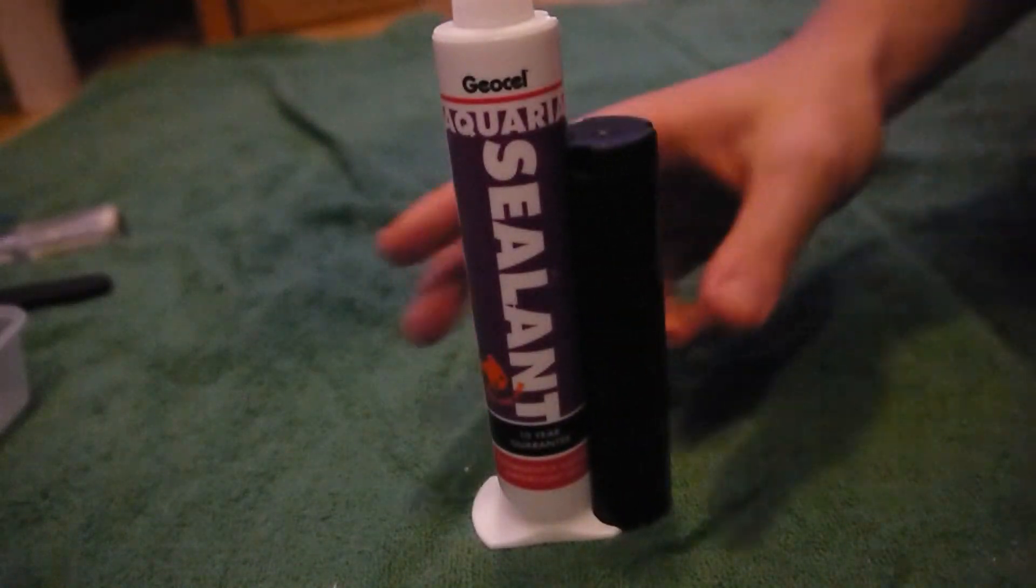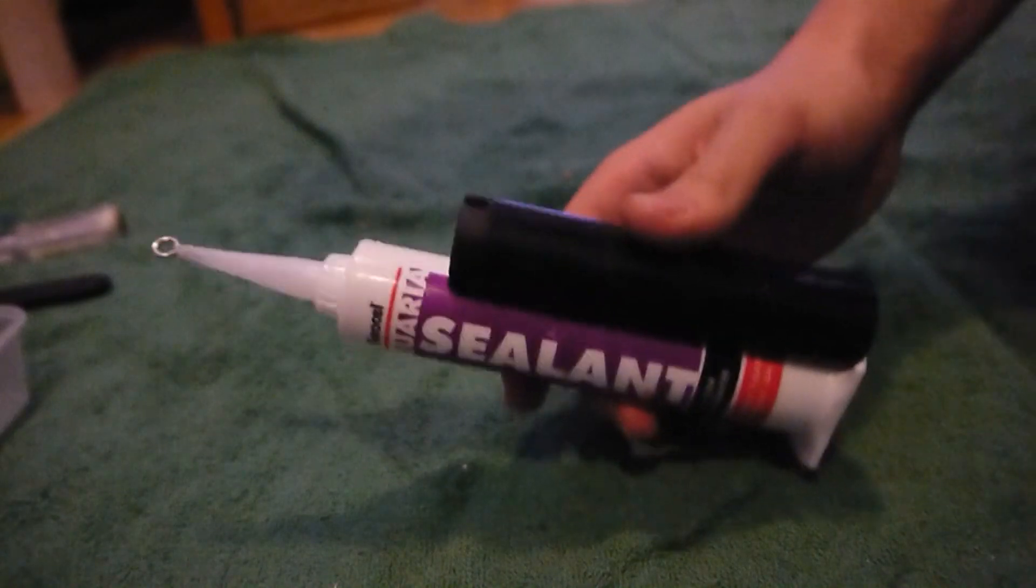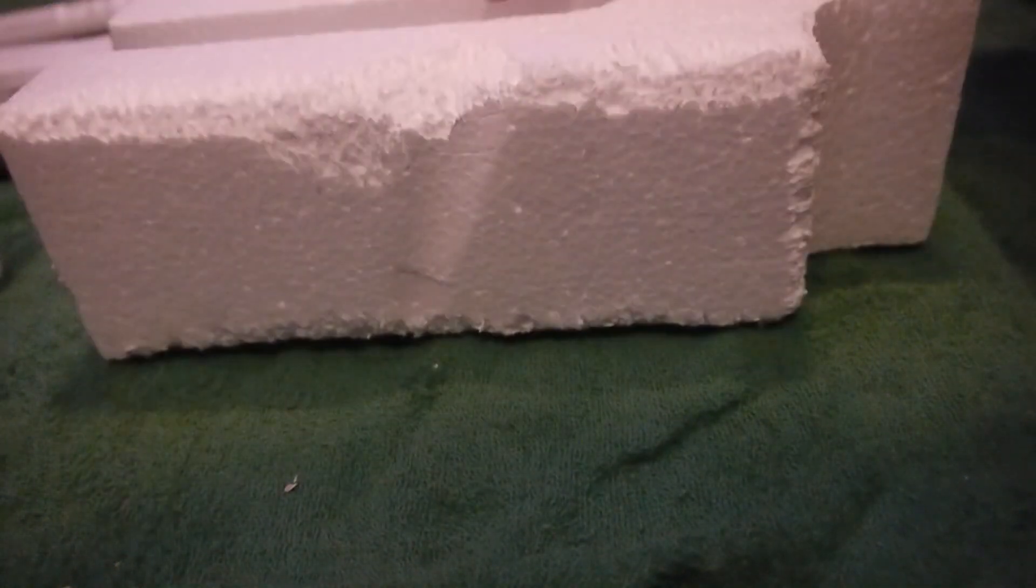You're also going to need aquarium sealant. I got this aquarium sealant from my local pet store for about eight pounds. It's very important that it's aqua safe, so it does not damage the fish in any way. You're also going to need some polystyrene. Polystyrene is very buoyant, so it's going to allow our container to float. It's good because you can find it just about anywhere.